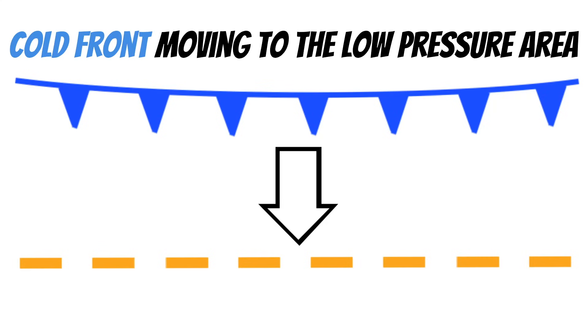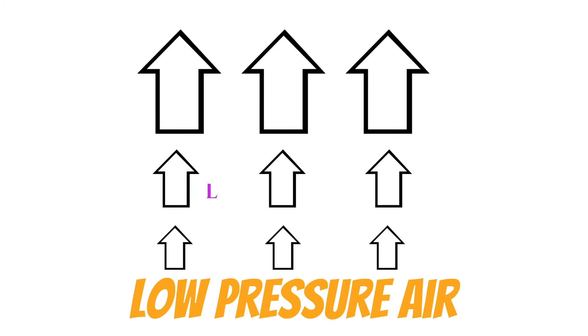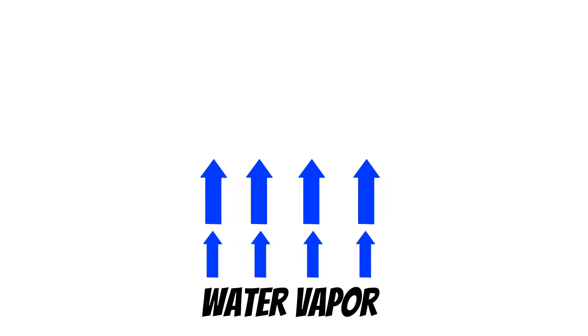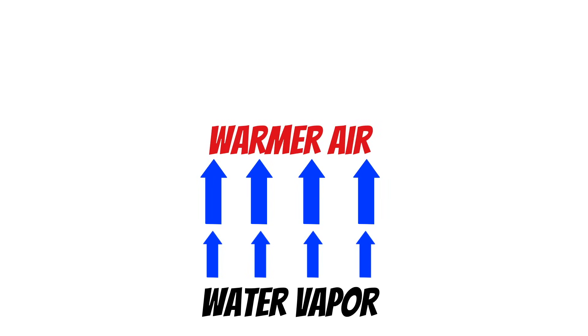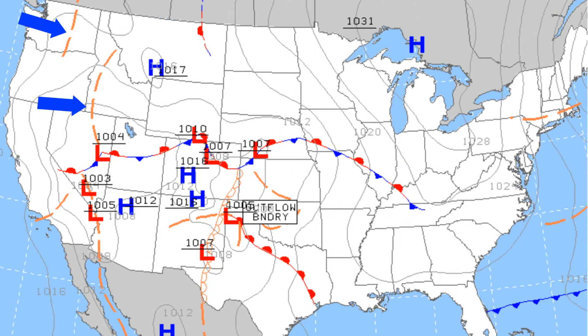Low pressure areas like troughs are usually associated with bad weather because that lighter, low-pressure air is being lifted, and that lifting motion can cause the air to be less stable. The weather you get depends on two things: how much moisture is in the air and the temperature. Water vapor is lighter than air, so the more of it there is the more quickly the air rises, and the hotter it is the faster it rises as well because the air is less dense.